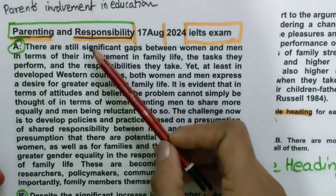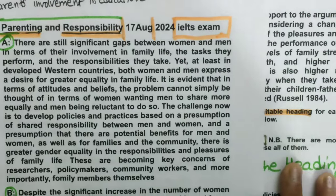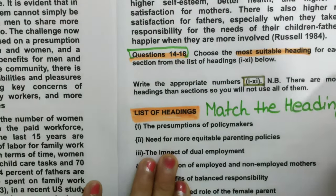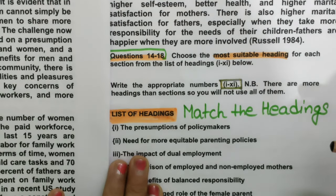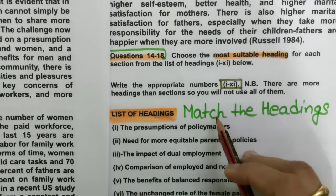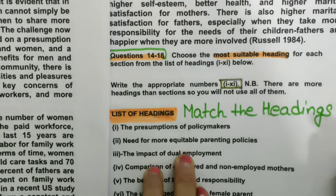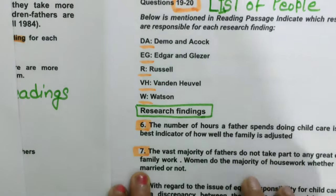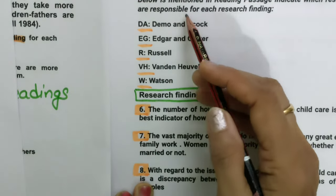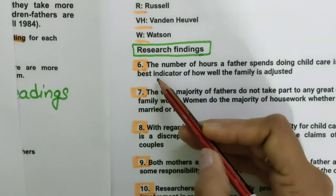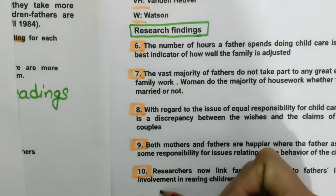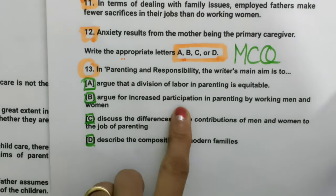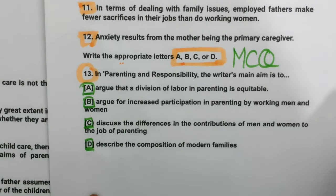Parenting means relating to child. For this reading we have three types of questions — some changes have been done and the difficulty level of the reading passage has been changed. The first one is Match the Heading, the second type of question is a List of People with many questions from 6 to 12, and the last remaining question is MCQ. First we will start this reading with the list of headings.